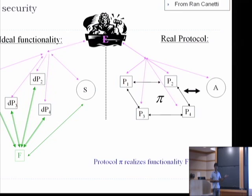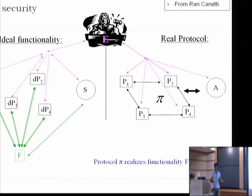In this ideal world, you assume the two parties wanting to do key exchange are just dummy parties. They themselves do nothing. They just feed their inputs to the ideal trusted third party, and the trusted third party computes a key for them and gives it back. The heavier arrows mean these are secure channels. So in the ideal world, you assume there is a secure channel from each dummy party to the ideal functionality.